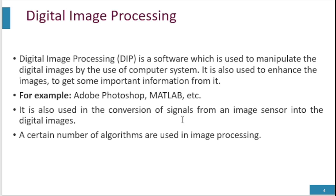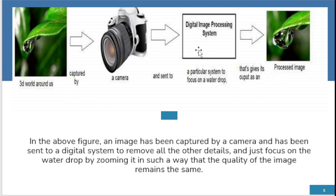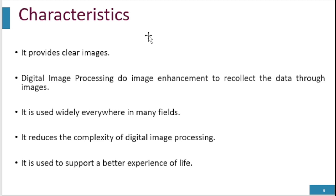Digital image processing is also used in the conversion of signals from an image sensor into a digital image. A certain number of algorithms are used in image processing. Here we have a figure that shows how to convert an image into a processed image: a picture is captured by the camera and sent to a DIP system, zooming in to focus on a detail like a water drop, while the quality of the image remains the same.